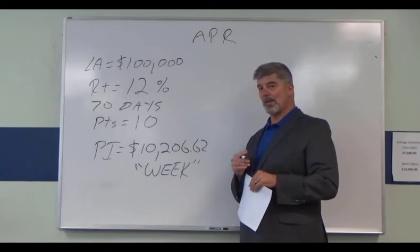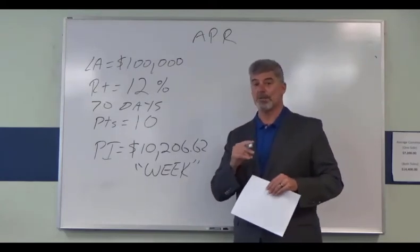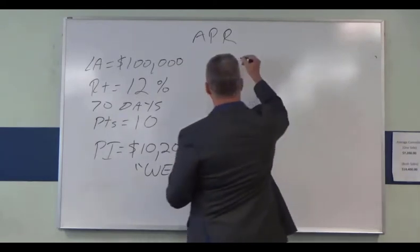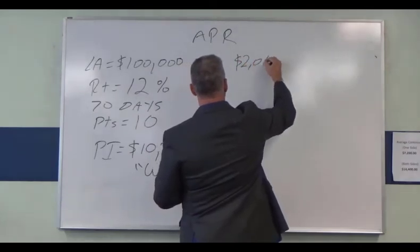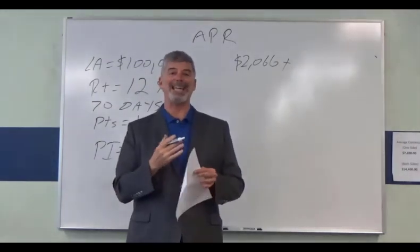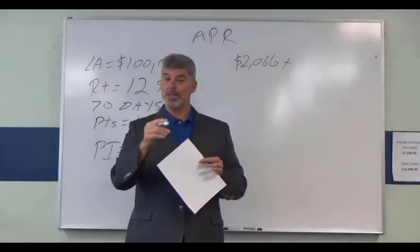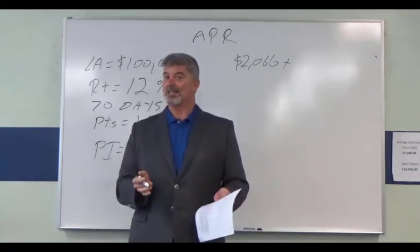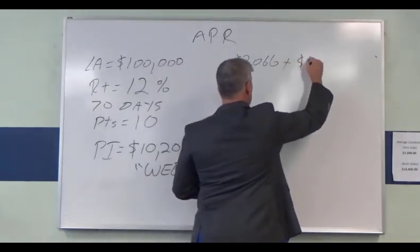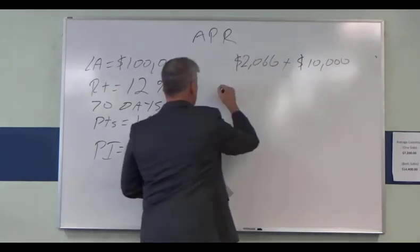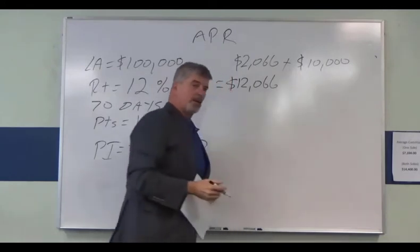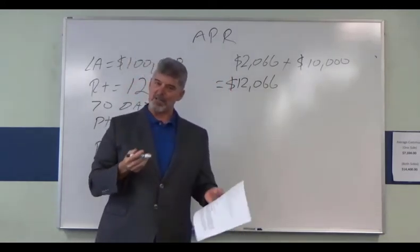Now, to calculate the APR, I'm going to take the interest paid over the term of the loan. That's $2,066, plus the points, because points are considered prepaid interest — that's why points are so important when you're calculating APR. This is easy: 10 points on a $100,000 loan is $10,000. So we paid $12,066 in interest on this loan.